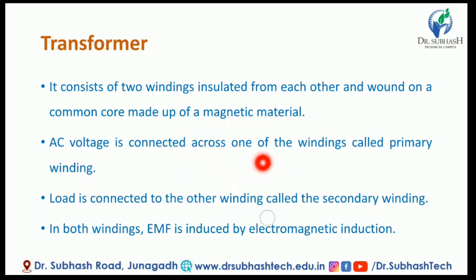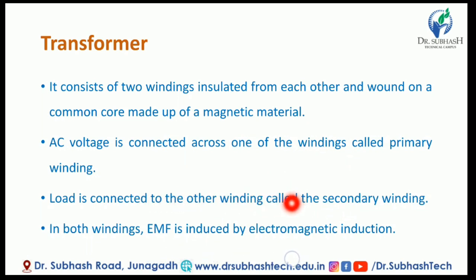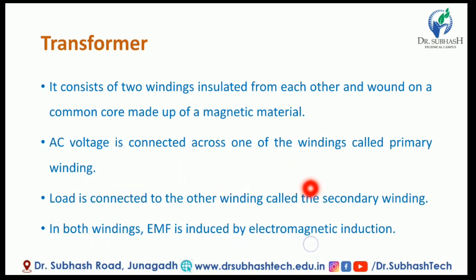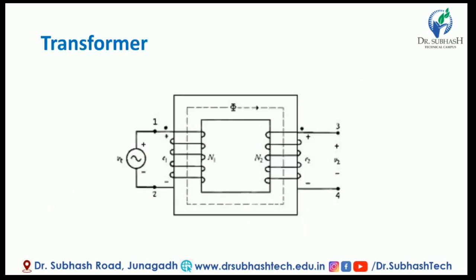AC voltage is connected across one of the windings called the primary winding, and is connected to another winding called the secondary winding. In both windings, EMF is induced by electromagnetic induction. This is the basic construction of the transformer.